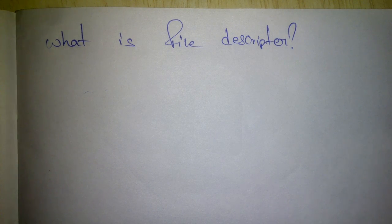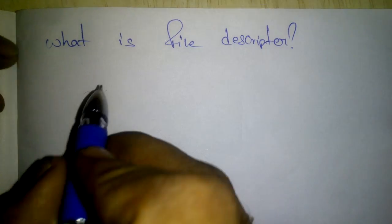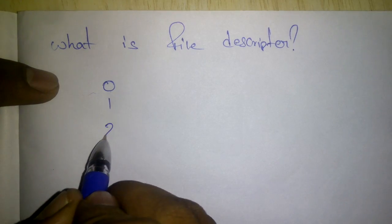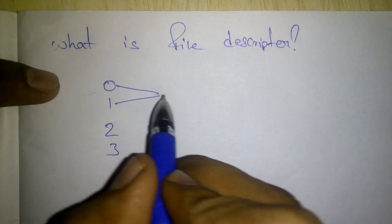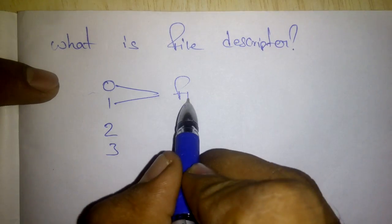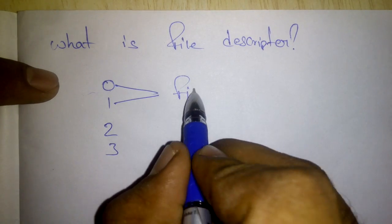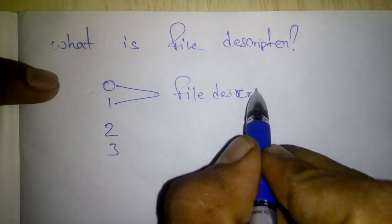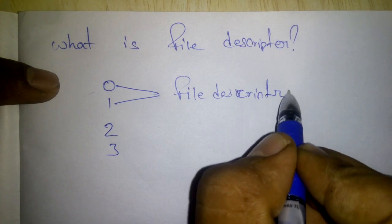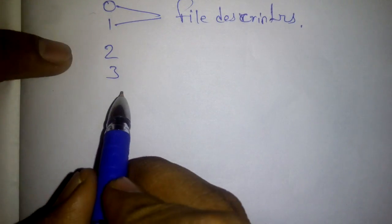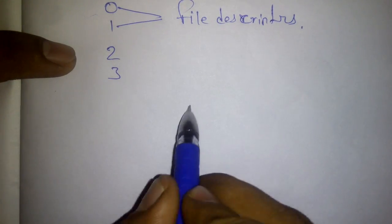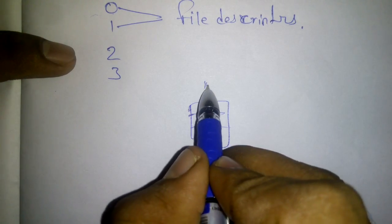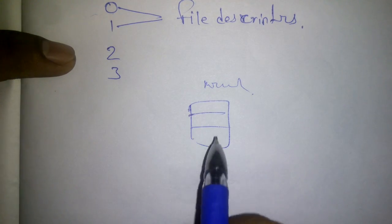What is a file descriptor? A file descriptor is a number like 0, 1, 2, 3. These are all file descriptors, and there is a table somewhere in the kernel.